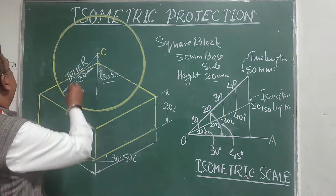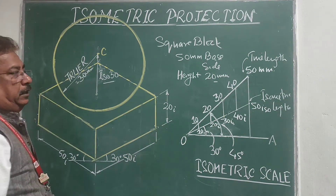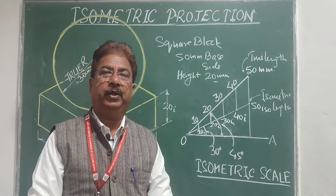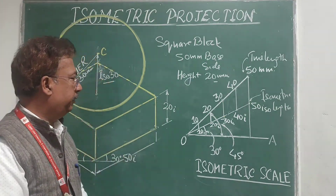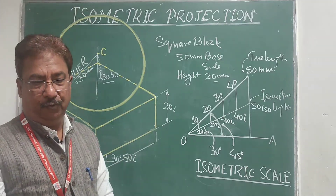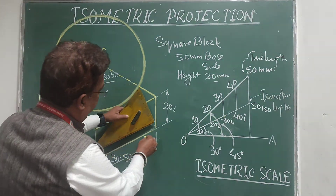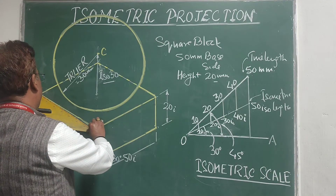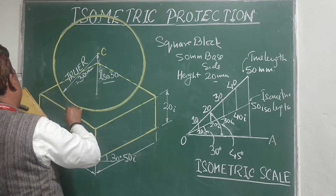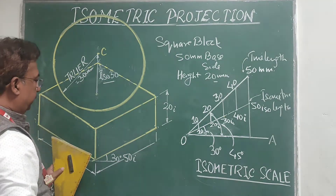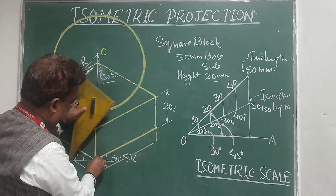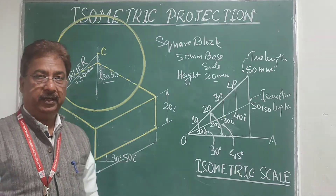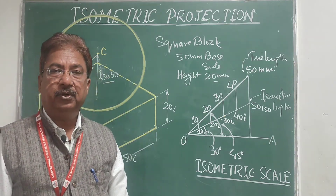This is the isometric projection of the composite arrangement. An important rule: whenever a problem involves a sphere, hemisphere, or frustum of a sphere along with any other solid, we always draw the isometric projection, not the isometric view. Please remember this concept — it is very important. Practice drawing this in your sketchbook.